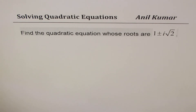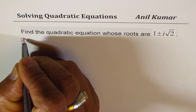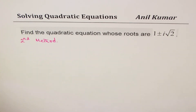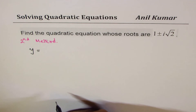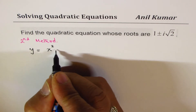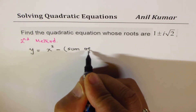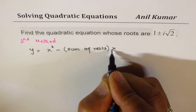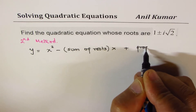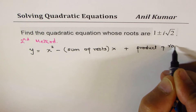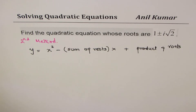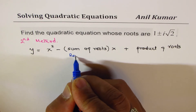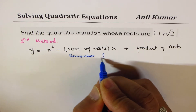Now let's look at method number 2. A quadratic equation can also be written as y = x² − (sum of roots)x + (product of roots). You have used this concept a lot in factoring — finding sum and product of roots.